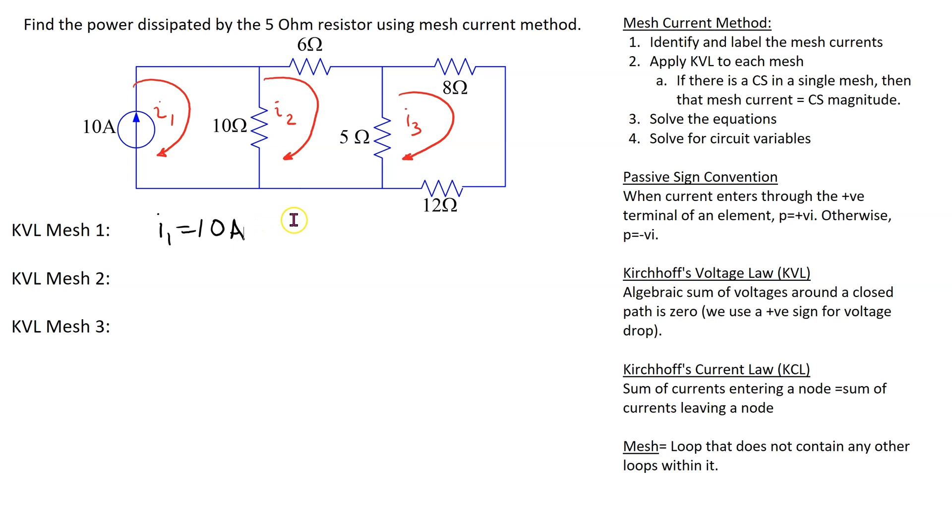Let's apply Kirchoff voltage law to mesh 2. In mesh 2, we have three resistors. We can start at any component. So, let's start here at the 6 ohm resistor. The current flowing through this is I2. So, what we get is plus 6 I2.